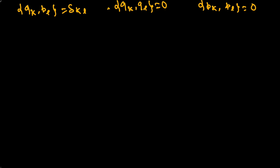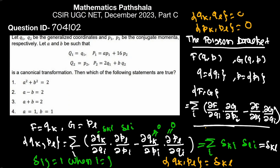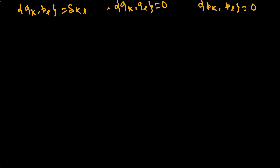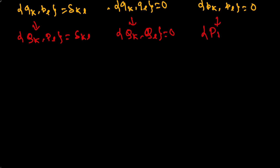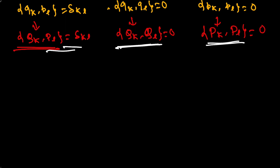Now, the Poisson bracket is invariant under canonical transformation. Since the given transformation is canonical, the Poisson bracket is invariant. So we can write: the Poisson bracket of capital Qk and capital Pl equals δkl, the Poisson bracket of capital Qk and capital Ql equals zero, and the Poisson bracket of capital Pk and capital Pl equals zero.